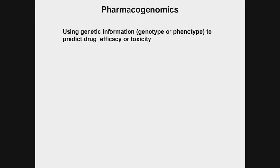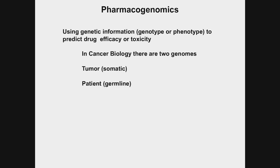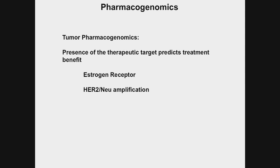I want to talk about another topic where we'll have profound impact in the foreseeable future: pharmacogenomics. As a definition, it's using genetic information — either the sequence of genes or expression of those genes, the genotype or phenotype — to predict drug efficacy or toxicity. In a tumor there are two genomes: the tumor genome and the patient genome. For the tumor genome in pharmacogenomics: the presence of a therapeutic target predicts treatment benefit. This is already something we do — if a patient has the estrogen receptor, we use hormonal agents; if they have HER2 amplification, we use HER2-targeted therapies. The expression of specific genes in the tumor predicts efficacy, and the absence of these markers predicts the lack of efficacy of those agents.